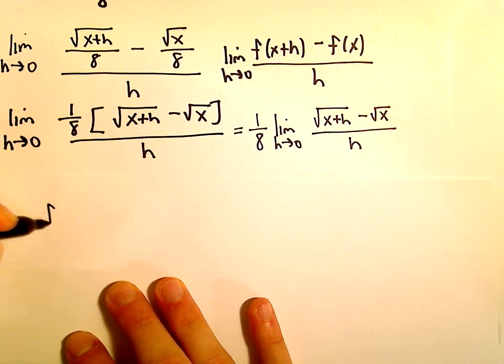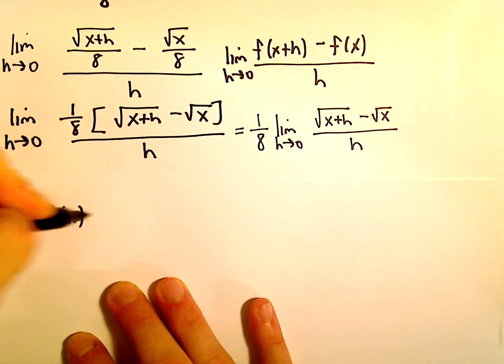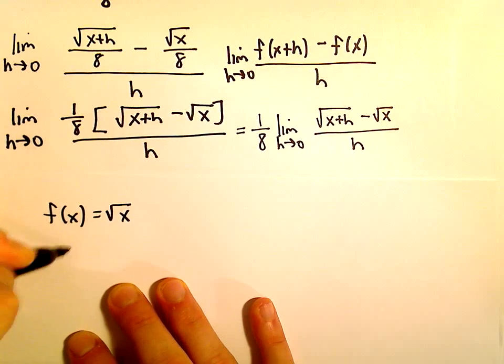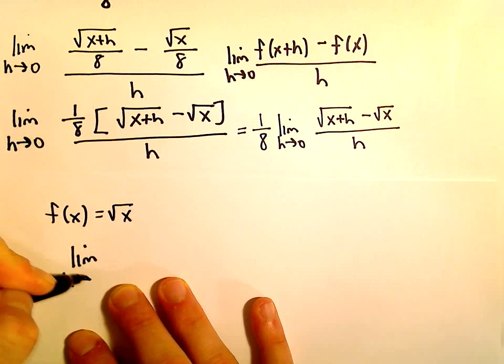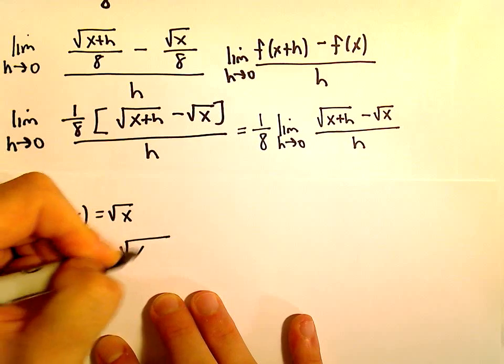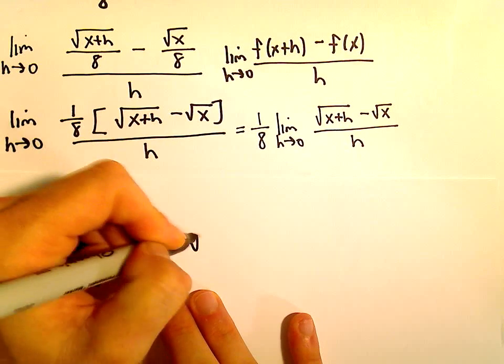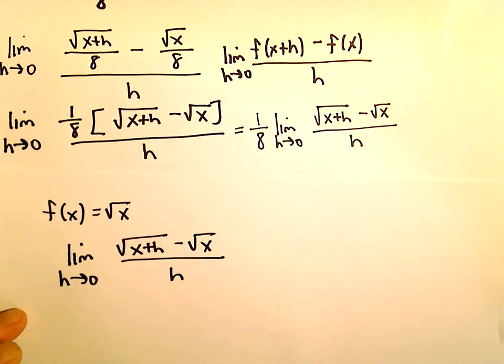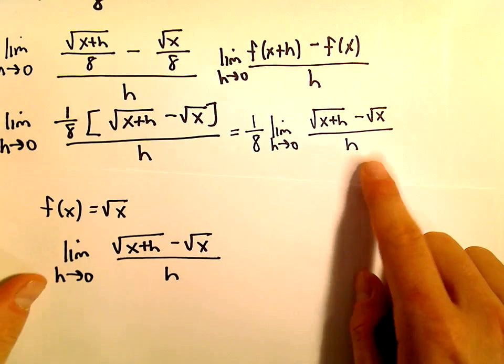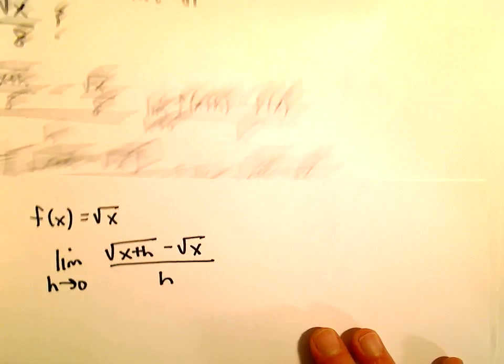Okay, so if you think about, if we started with the function f of x equals square root of x, if we wanted to find the derivative, we would get the limit as h goes to 0 square root of x plus h minus square root of x all over h. And that's what we have in this new expression.